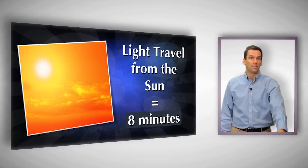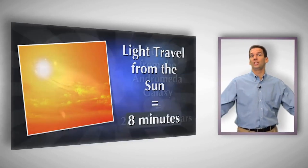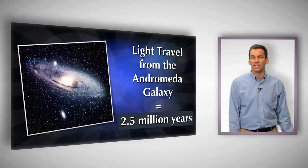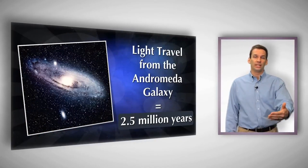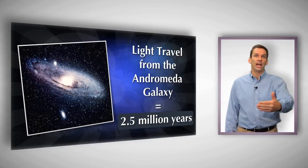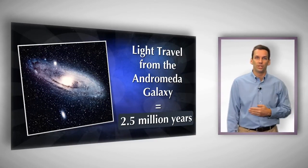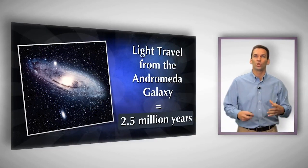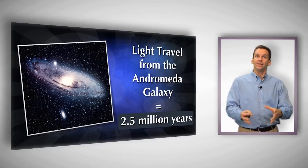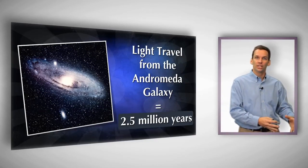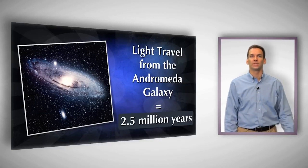If we look at the closest large galaxy to us — the Andromeda galaxy — the light from Andromeda takes two and a half million years to travel to us. So we're seeing the Andromeda galaxy as it looked two and a half million years ago.